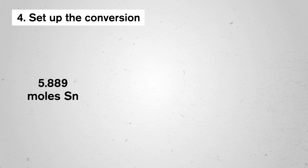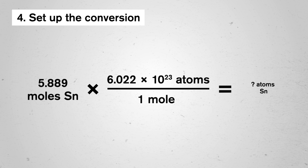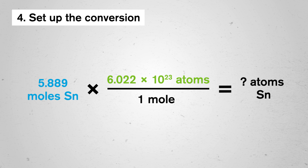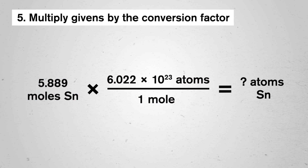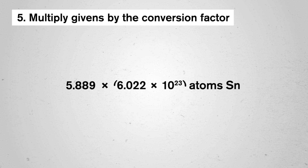Now we can lay out our calculations. We're starting with 5.889 moles of tin, which we multiply by our conversion factor in atoms per mole. So we'd multiply 5.889 moles of tin by 6.022 times 10 to the 23rd atoms divided by 1 mole. We multiply our terms and cancel out our mole units, leaving our answer in atoms of tin — that is, 5.889 times 6.022 times 10 to the 23rd, which gives us our answer in atoms.